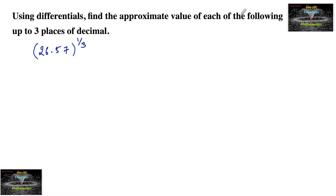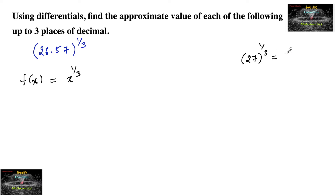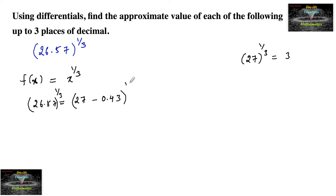Using differentials, find the approximate value of 26.57 to the power of 1/3, up to three decimal places. Let us consider the function f(x) = x^(1/3). Since the nearest value of 26.57 for which a cube root is easily found is 27 — since 27^(1/3) = 3 — we can write 26.57 as 27 minus 0.43. So 26.57^(1/3) = (27 − 0.43)^(1/3).